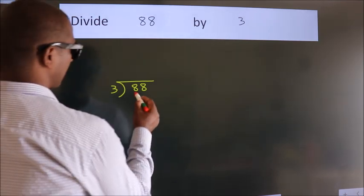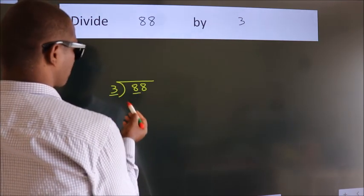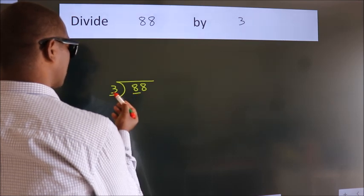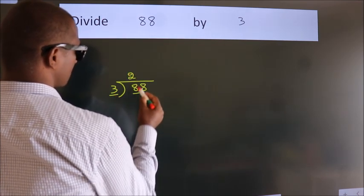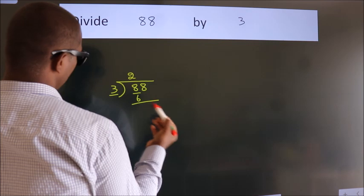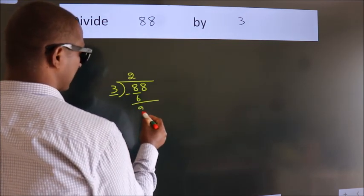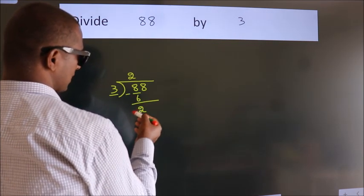Here we have 8, here 3. A number close to 8 in the 3 table is 3 times 2 which is 6. We should subtract. We get 2. After this,